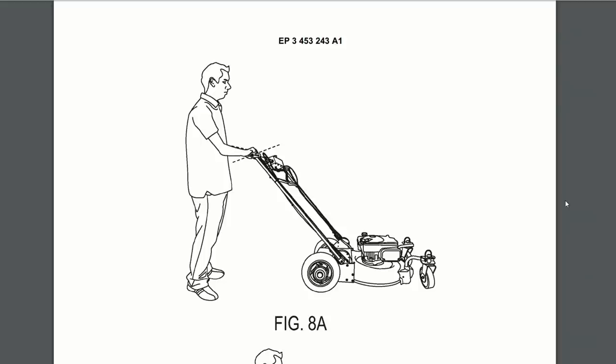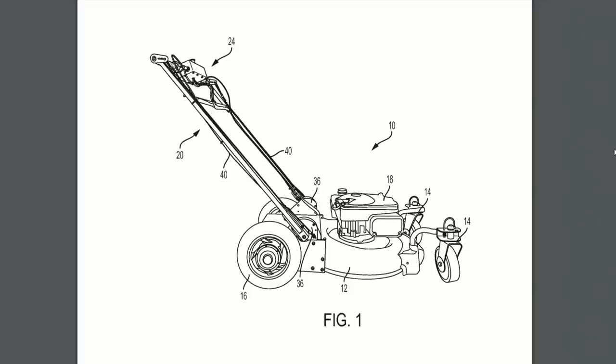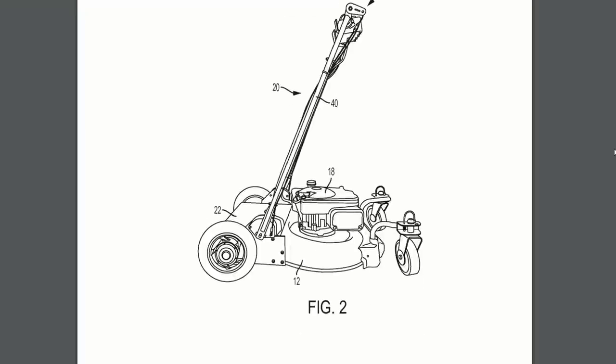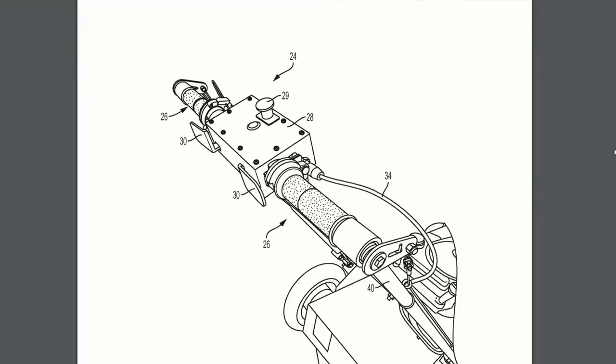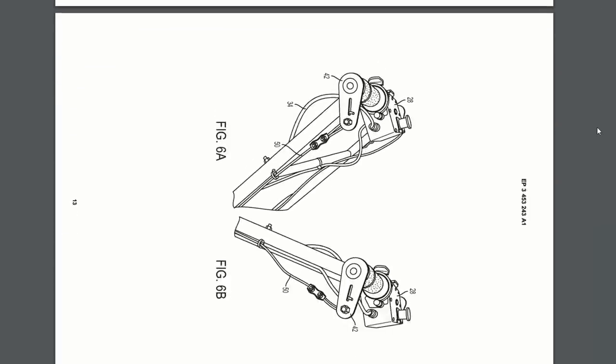This is a ride on push mower that's convertible. So you can walk behind it like a regular mower, or you can flip the handle forward and use it as a stand up riding mower. It is a gas engine for powering the mower blades, but it shows cordless options for powering the motors on the wheels. So it's either a one or two battery design. I bet it's going to be a flexible if it's one battery.